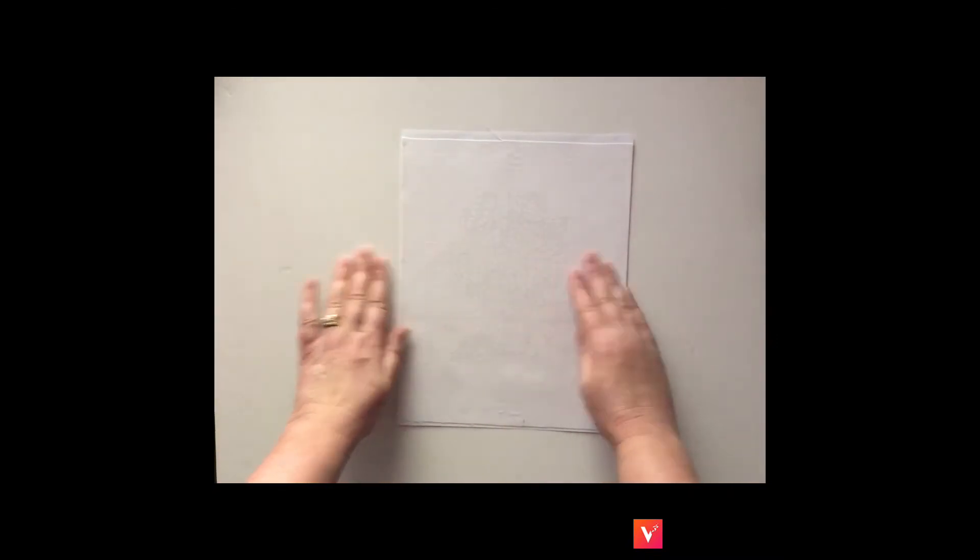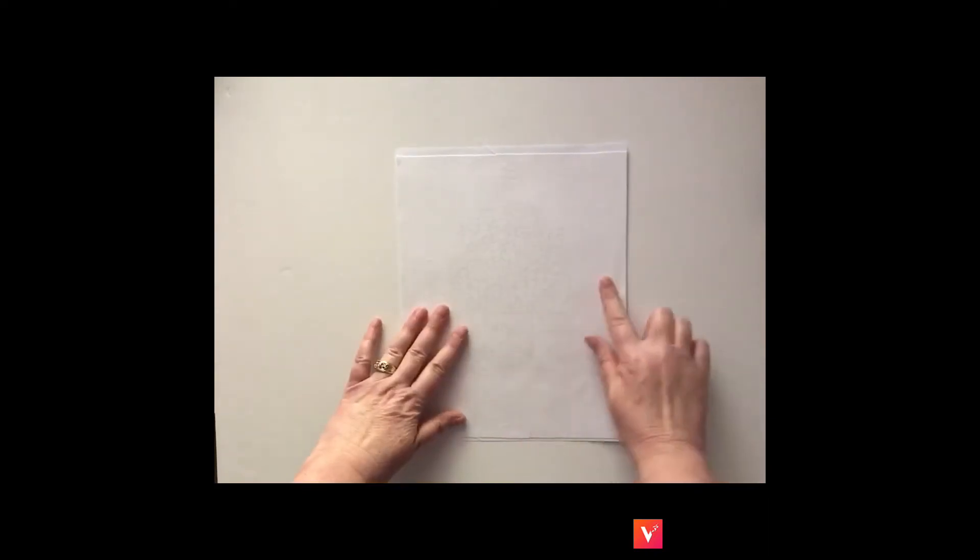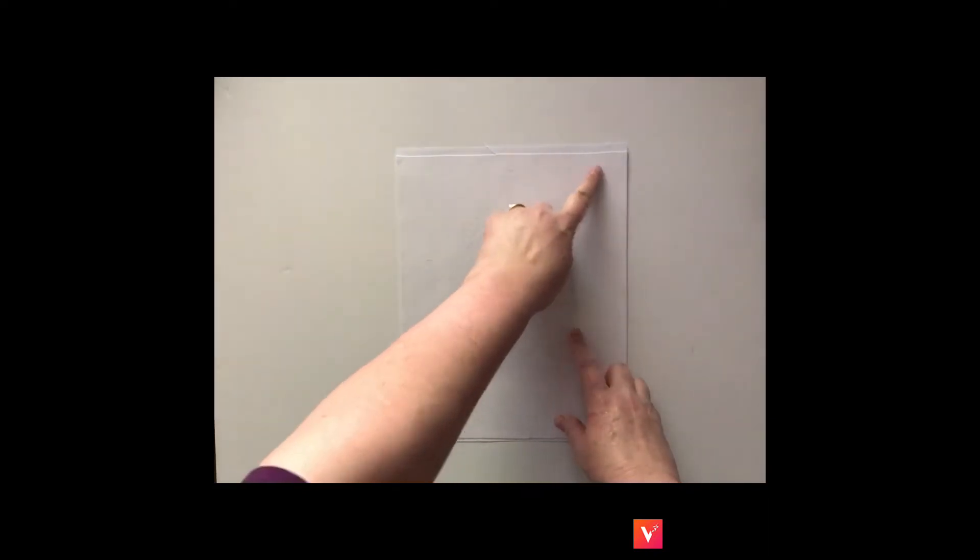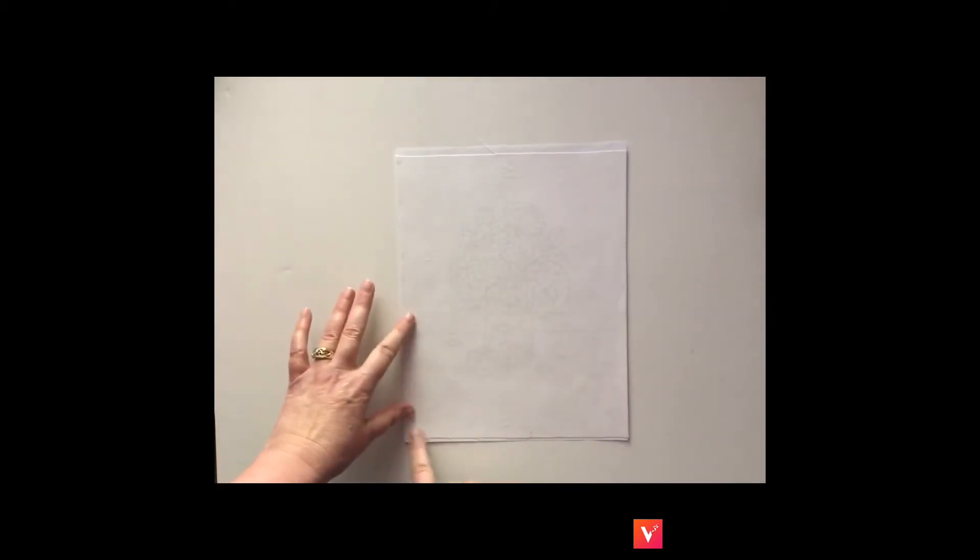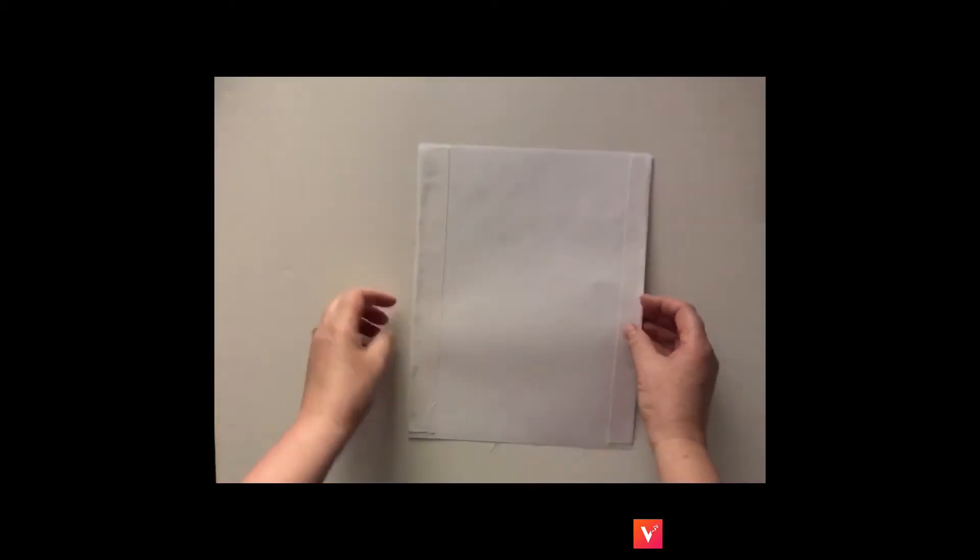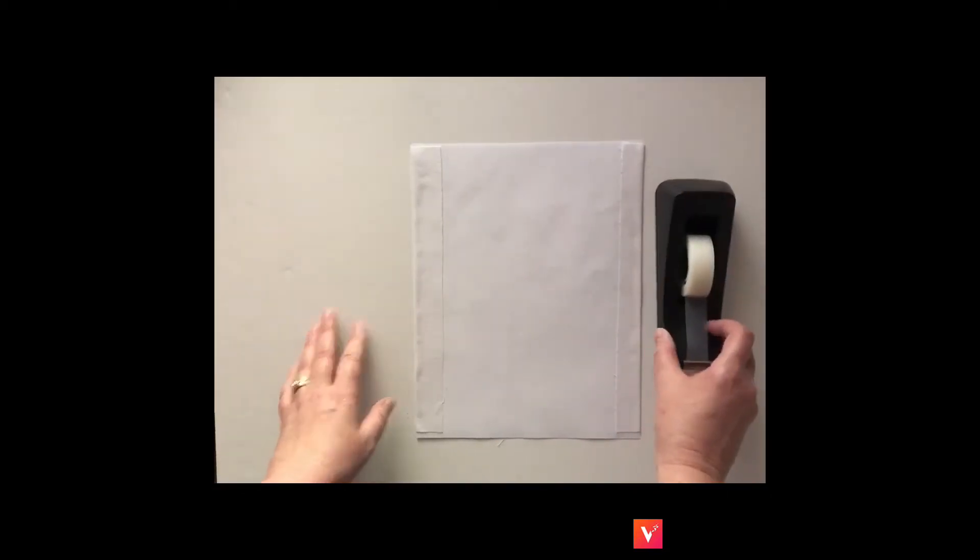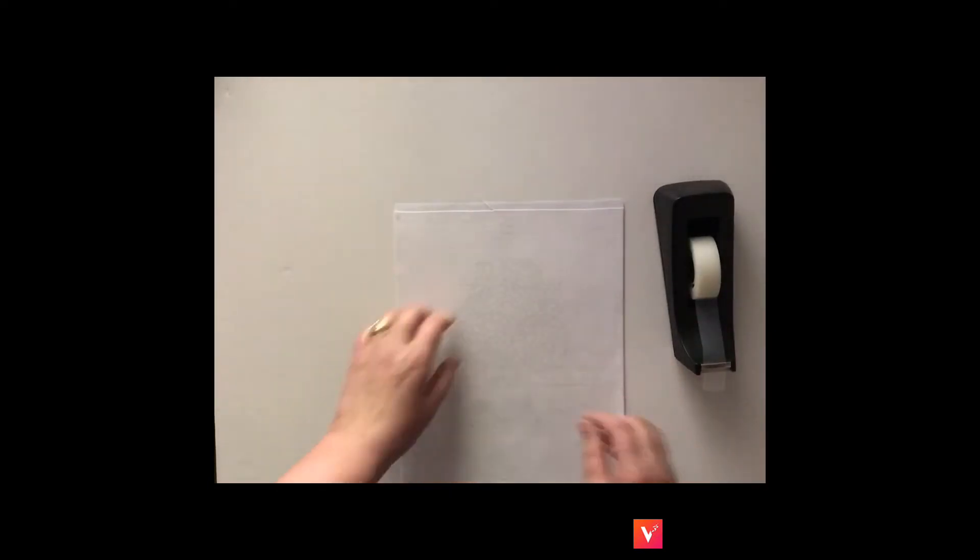Get all the wrinkles out like that. And now, before you put it in your printer, you're going to want to tape the raw edges. The edge along here and here and along the back with your tape. So I'm going to do that on the front.